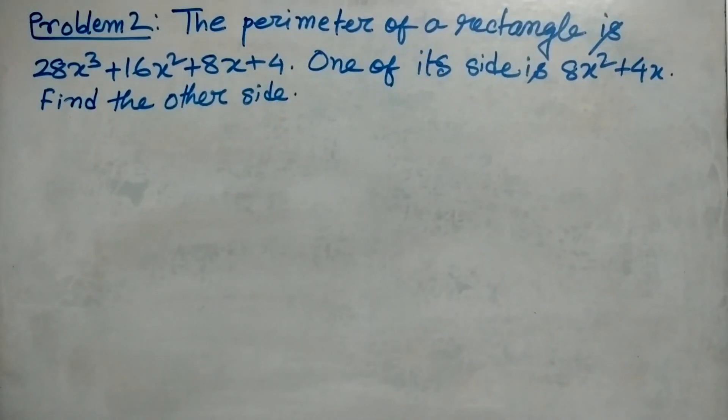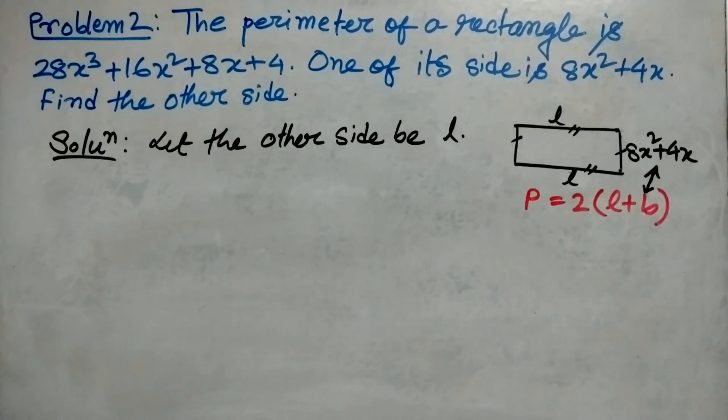Problem number two: The perimeter of a rectangle is 28x³+16x²+8x+4. One of its side is 8x²+4x. Find the other side. For the solution, let the other side be l. We know perimeter of a rectangle equals 2(length + breadth).